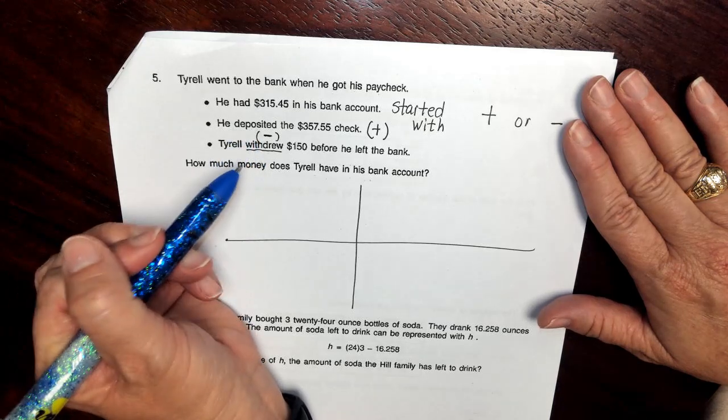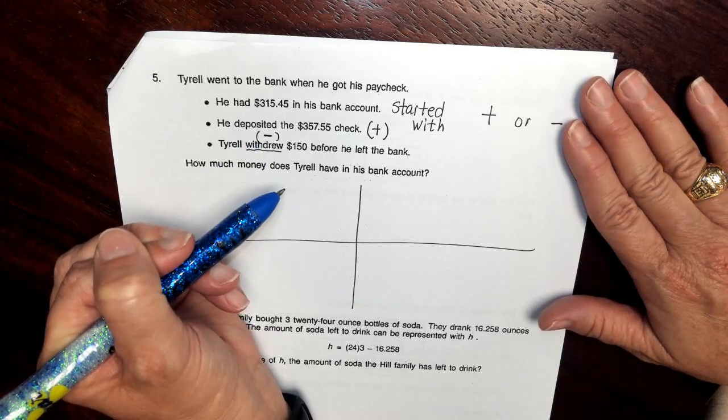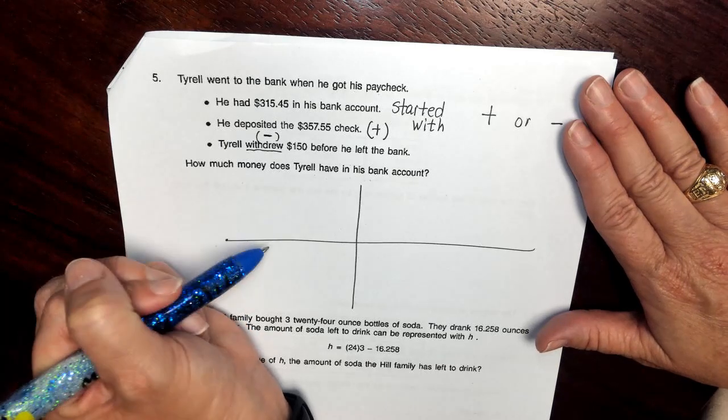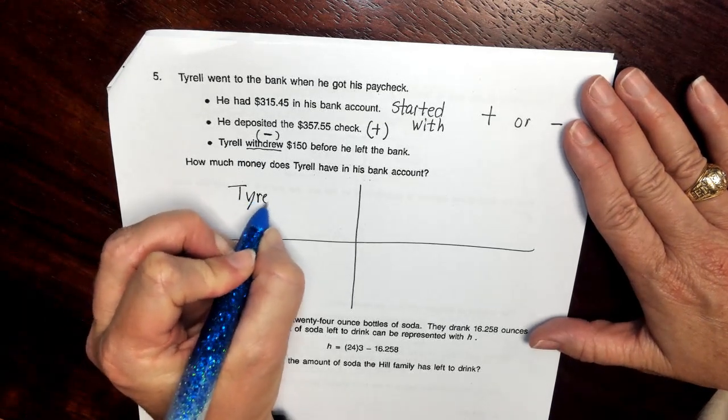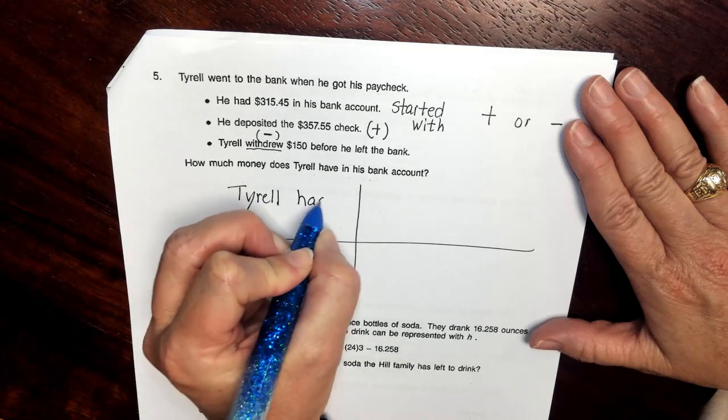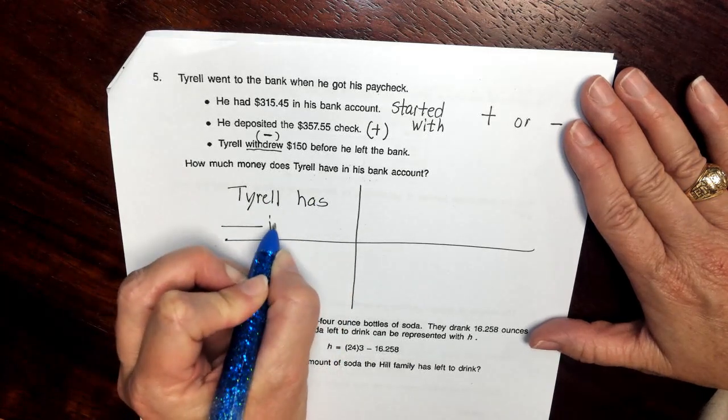Once we do all these actions, that will tell us what Terrell has in his bank account. So we can start this by saying Terrell has blank in account.